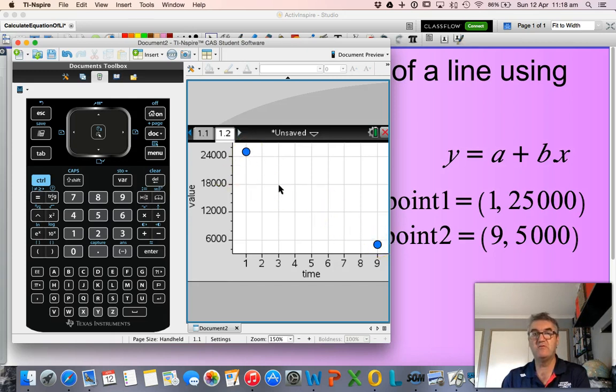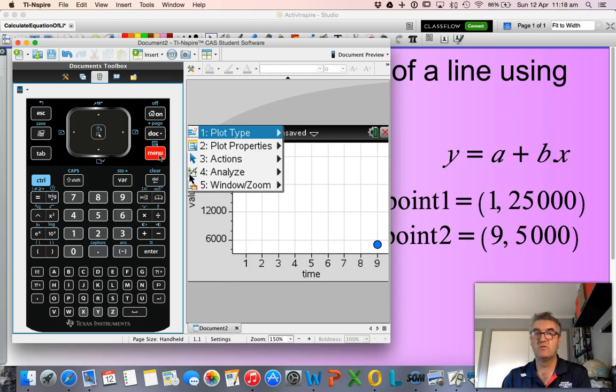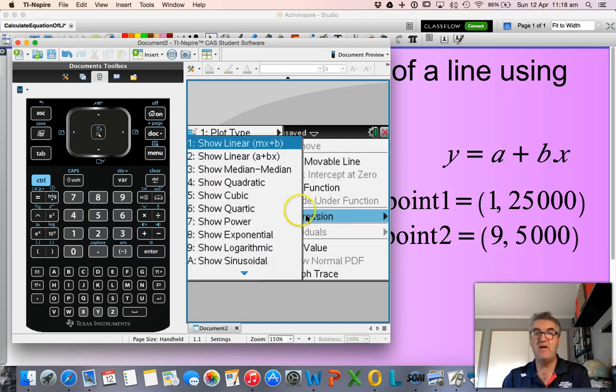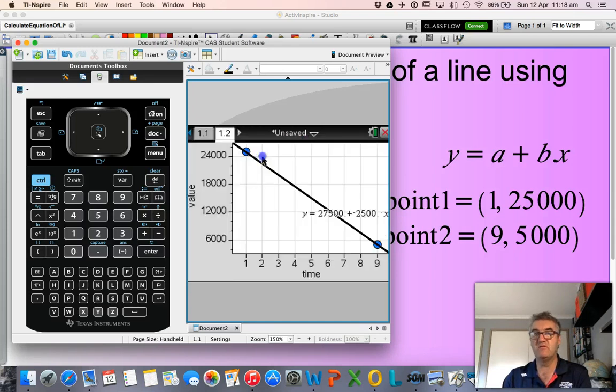All I'll need to do now is do my line of best fit. So it goes from your menu. It's 4 for analyze, 6 for regression, and 2 for a plus bx. And you'll see here it's done my line of best fit, which has to go through those two points. And it's given me the equation here. So y equals, there's my a value, 27,500 minus 2,500x.